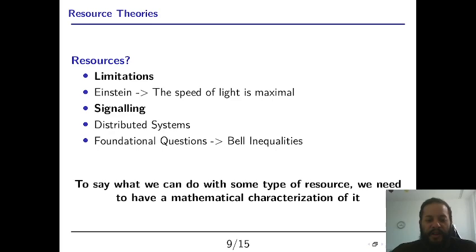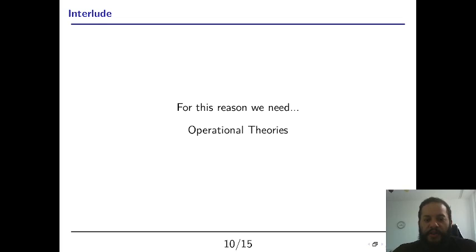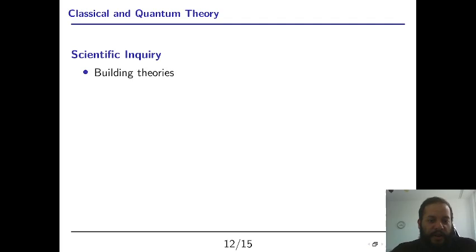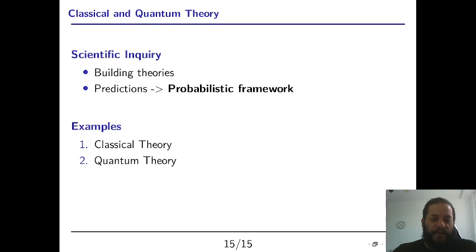Now to see what we can do with some type of resource we need to have a mathematical characterization of it. And that is where operational theories show their need. So in scientific inquiry people are building theories, and with these theories we make predictions, which means that there must be a probabilistic framework there. For example, classical and quantum theory are examples of probabilistic frameworks that people can use.